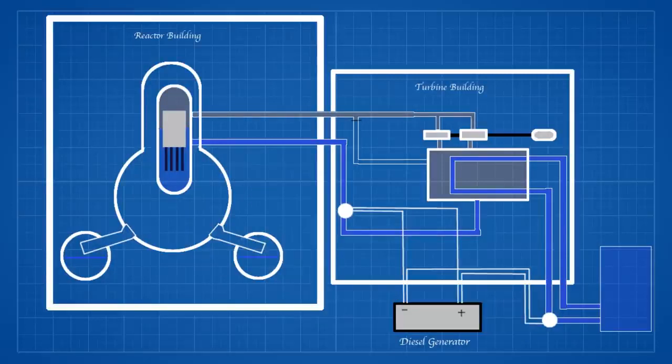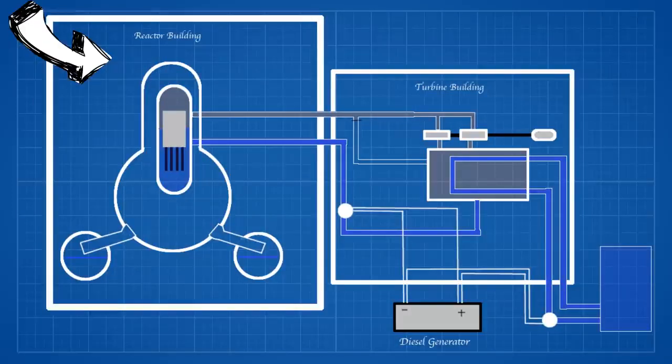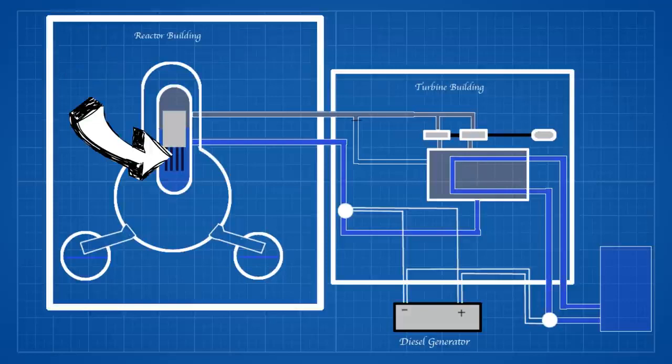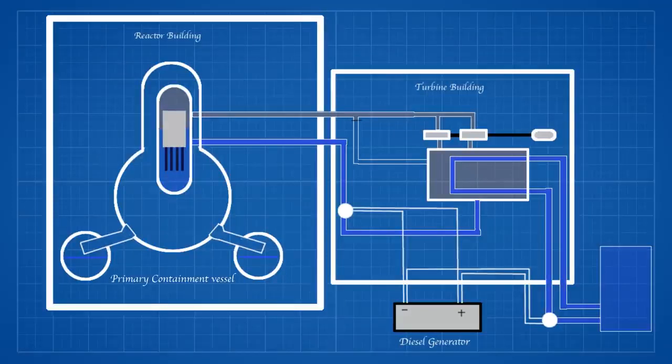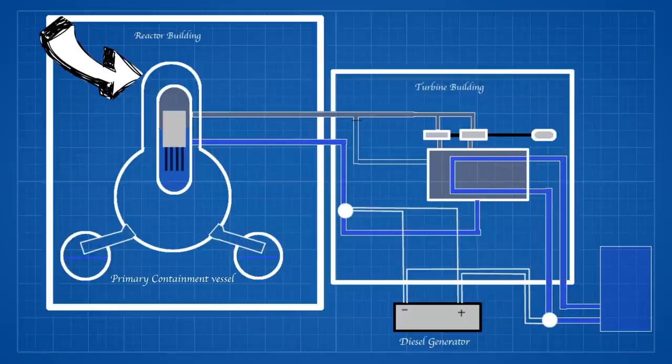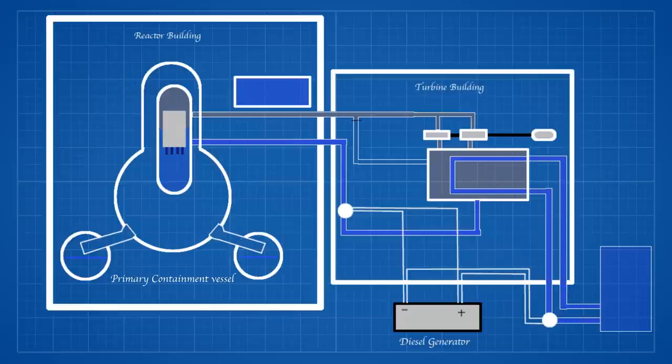The reactors have two types of containment: the reactor primary containment vessel and the building housing it. The core is kept within a containment vessel, with an outer containment enclosed by a concrete plug. The plug can be moved by crane over the spent fuel pool, where used fuel rods are stored.